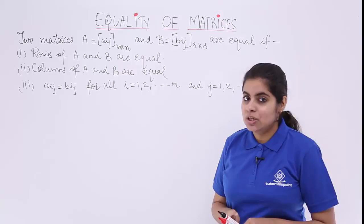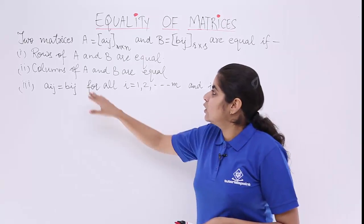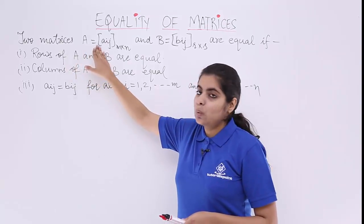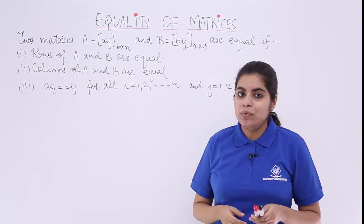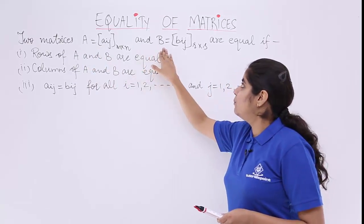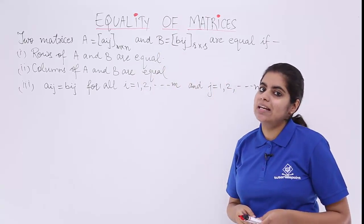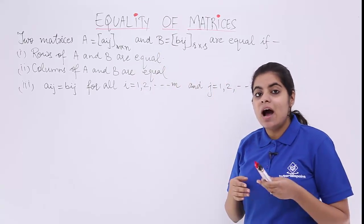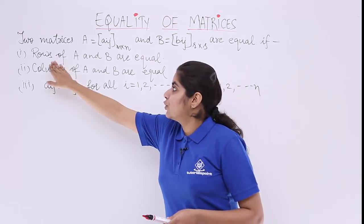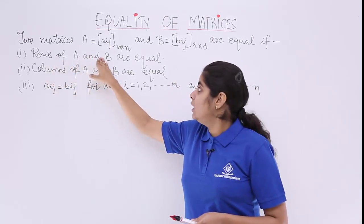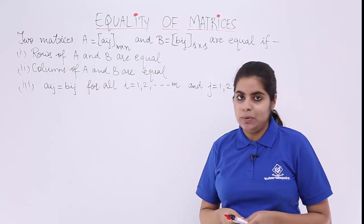Let's read about equality of matrices. Two matrices A, which is Aij, M by N — that means M rows and N columns — and B, which is Bij, R by S — that means R rows and S columns — are said to be equal when the first condition holds: rows of A and B are equal.